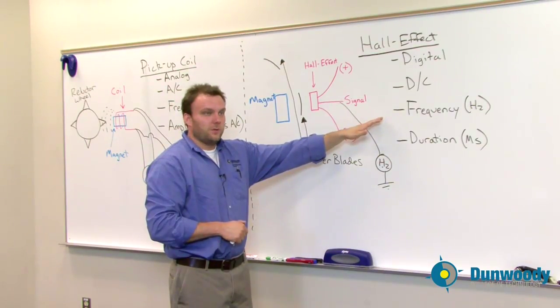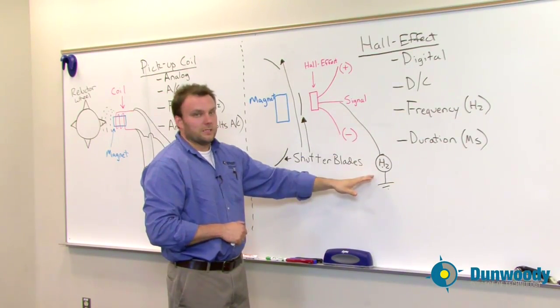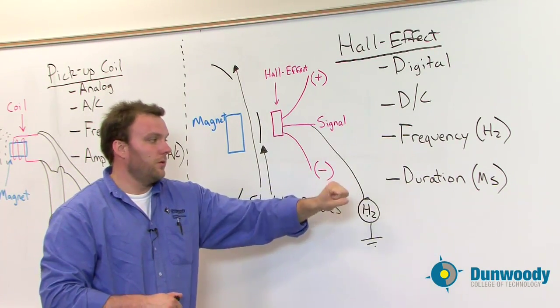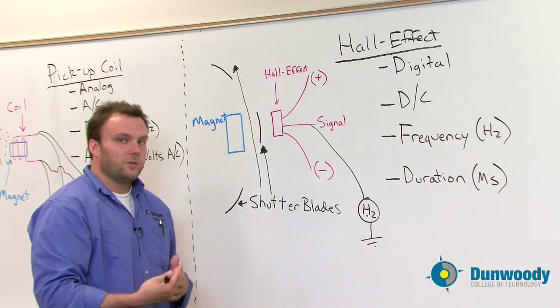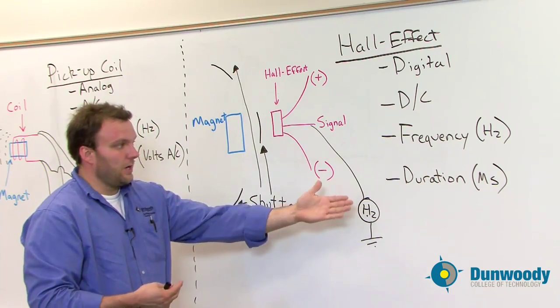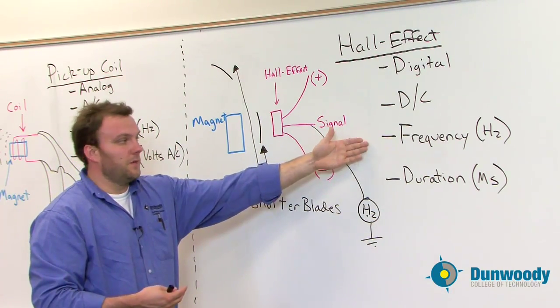We can measure frequency and duration. We can measure it in frequency with your DMM set to a frequency scale. We can also measure it in duration using a scope of some sorts. However, out in the industry, you're probably not going to have a scope. However, if you do, you can measure that way, but you will all have DMMs to measure it with frequency.